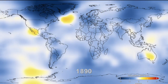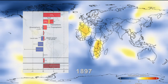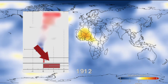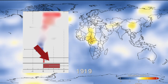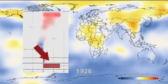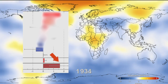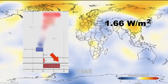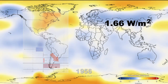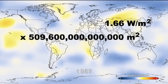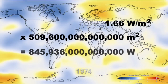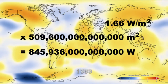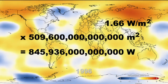When all human and natural forcing agents are considered together, scientists have calculated that the net change in climate forcing between 1750 and 2005 is pushing Earth toward warming. The extra energy is about 1.6 watts per square meter on the surface of Earth. When multiplied by the total surface area of Earth, this represents more than 800 trillion watts of energy being added to Earth's climate system every second of every day.